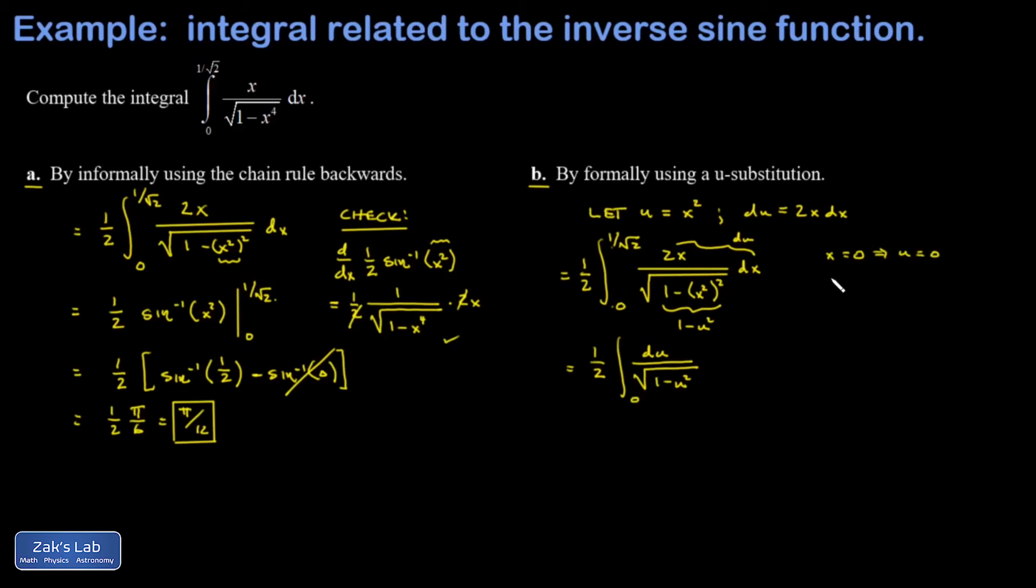And it means when x is 1 over root 2, u is x squared, which is 1 half. So now I don't have to think about x's anymore. I'm just going to get a number out of this.